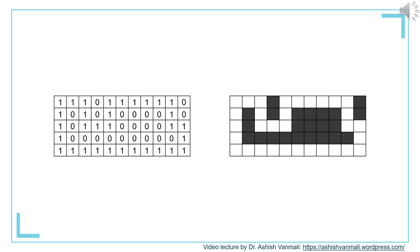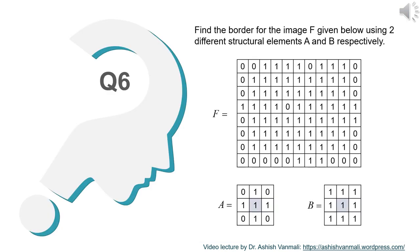So we can see that the process of boundary extraction is very simple — it is just a simple operation of erosion followed by a subtraction operation. Let's move to the next question.